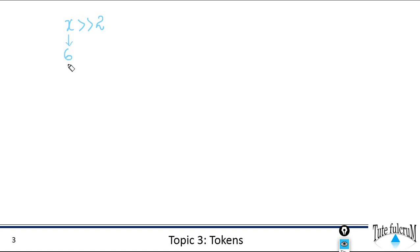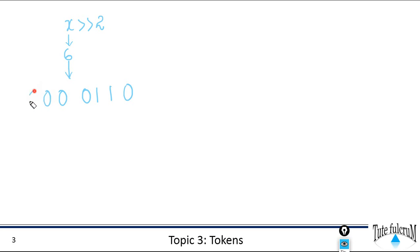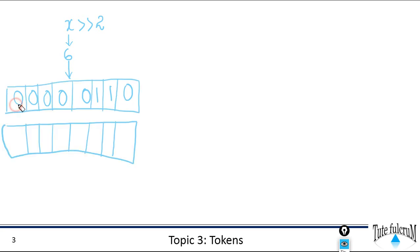Since these are bitwise operators, they are going to manipulate each and every bit of the operand. So we need to consider our operand in binary form. Six in binary form is represented as 0110. Taking it as an eight-bit value, six is represented as 00000110. Let's start shifting the data from the MSB, first shifting by one bit position.